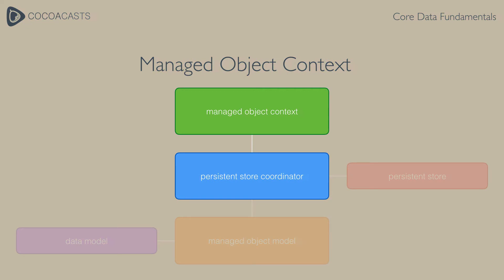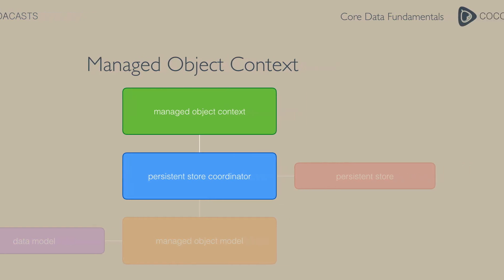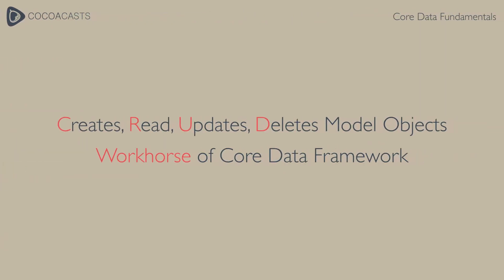As you can see in this diagram, a managed object context keeps a reference to the persistent store coordinator of the application. The managed object context is the object you interact with most. It creates, reads, updates, and deletes model objects. From a developer's perspective, the NSManagedObjectContext class is the workhorse of the Core Data framework.